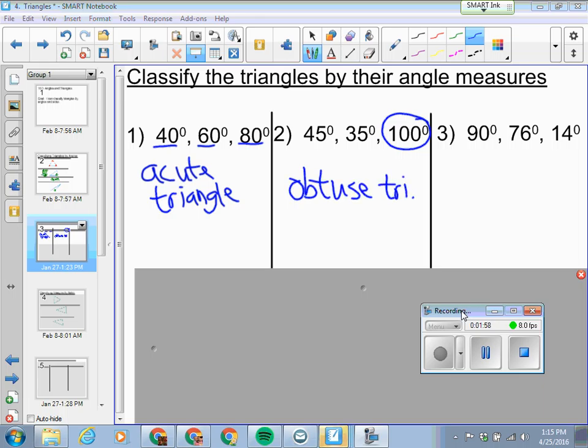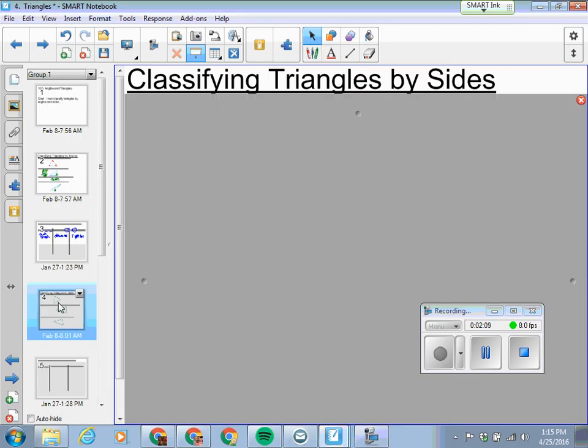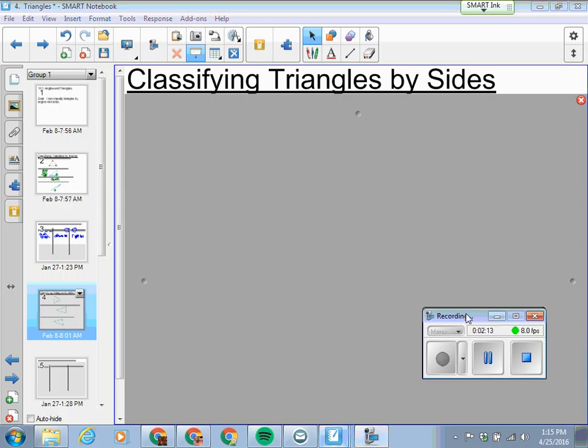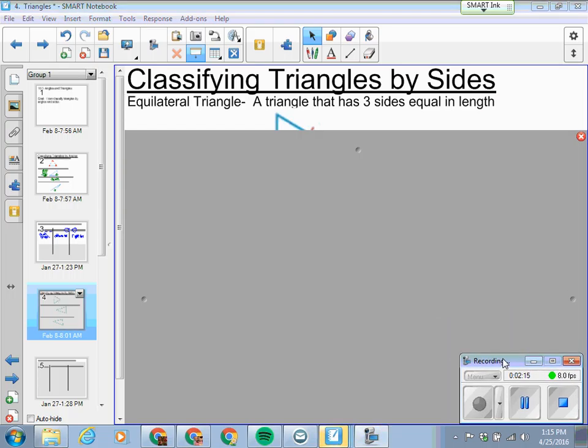Number two, I look at three angles: 45, 35, 100. That's an obtuse angle, so this must be an obtuse triangle. And number three, well I see this right off the bat, 90 degrees. It must be a right triangle.